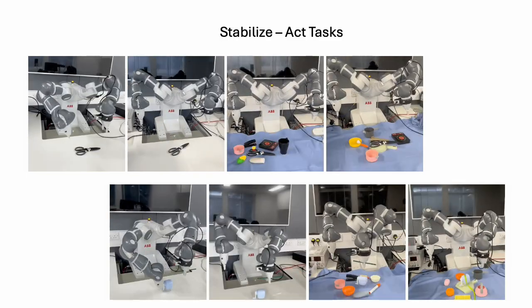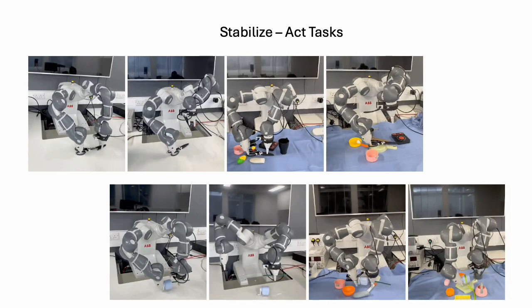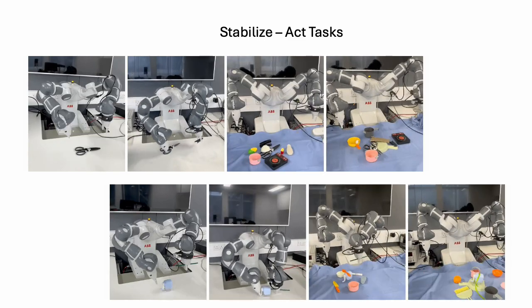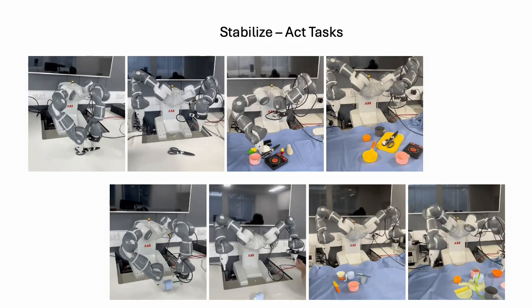For tasks like uncovering the scissor or inserting the pencil into the sharpener, the robot uses motion planning to generate dynamic trajectories to the stabilizing poses.